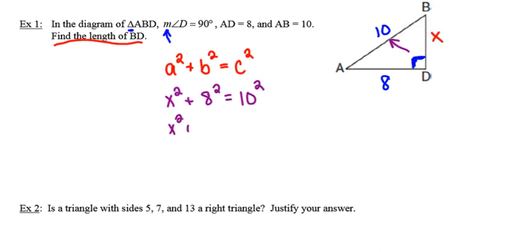So X squared plus 64 is equal to 100. I'm going to go ahead now and subtract 64 from both sides of my equation. So X squared is equal to 36. And now to finish this off, I'm going to take the square root of both sides.